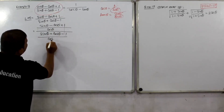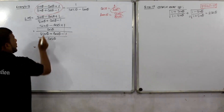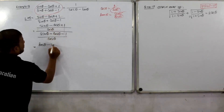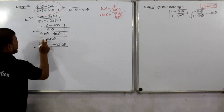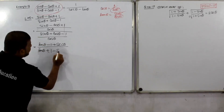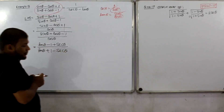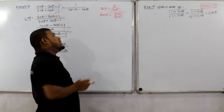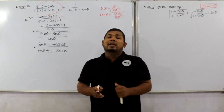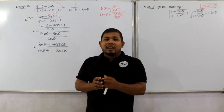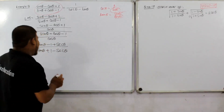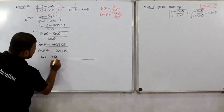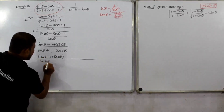So we have 1 divided by cos theta. The expression involves sin theta, cos theta, and tan theta terms. We are using the identity 1 divided by sec theta minus tan theta. There is sec theta minus tan theta, so I am able to use sec theta minus tan theta in this expression.